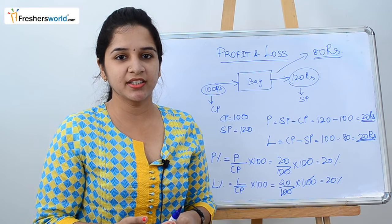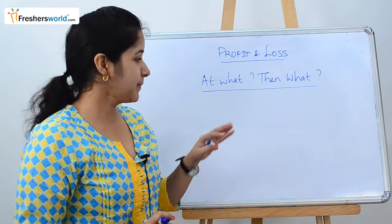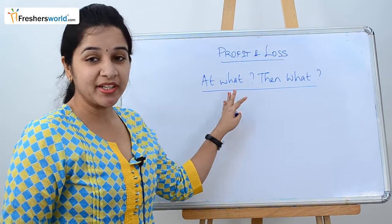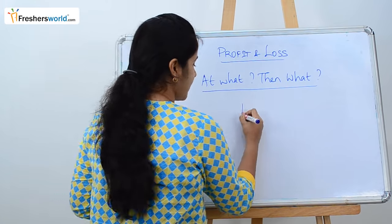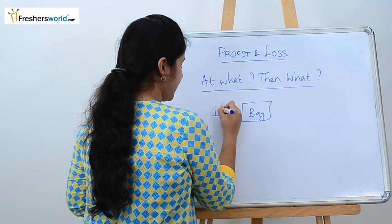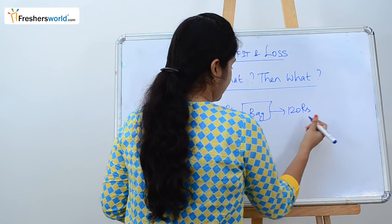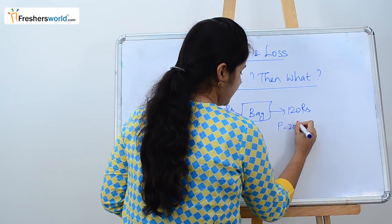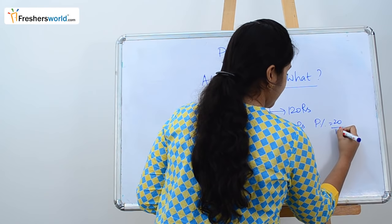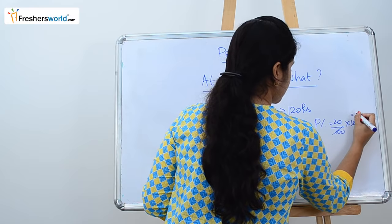Let's look at another type of problem: the 'at what price' type. Using the same bag example — cost price 100 rupees, selling price 120 rupees — profit is 20 rupees, and profit percent is 20 by 100 into 100, which is 20 percent.